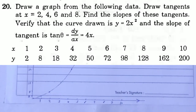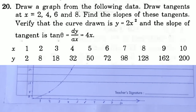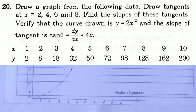S.C. Verma Solution, Chapter 2, Physics and Mathematics, Question No. 20. Draw a graph from the following data. Draw tangent at x equal to 2, 4, 6 and 8. Find the slope of this tangent. Verify that the curve drawn is y equal to 2x squared and the slope of tangent is tan theta equal to dy by dx equal to 4x.